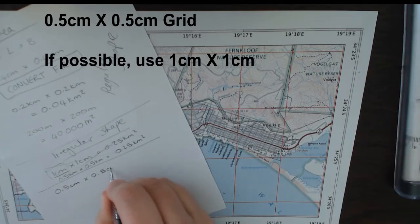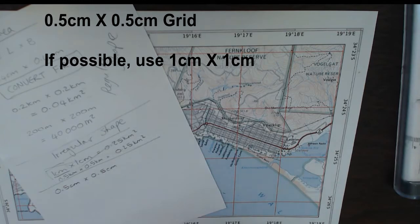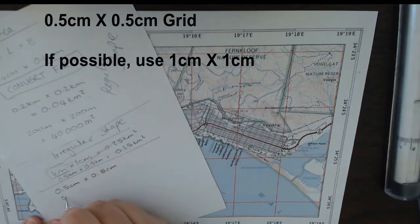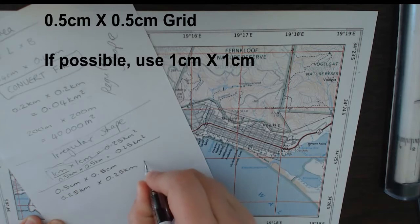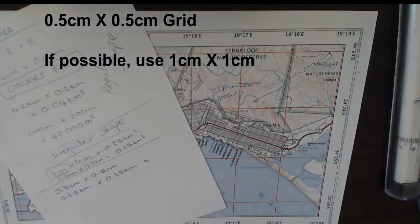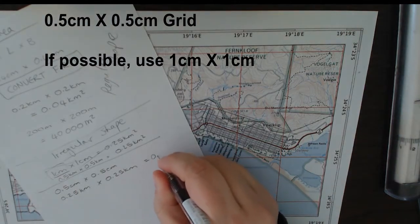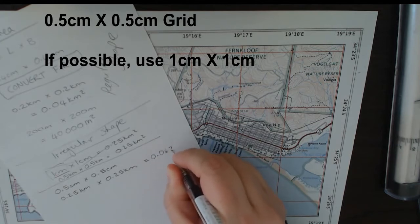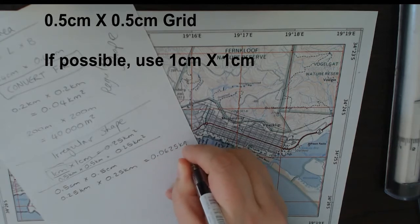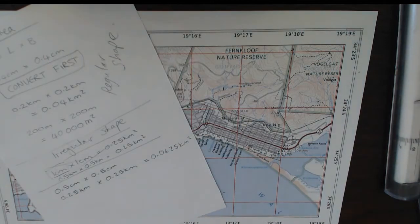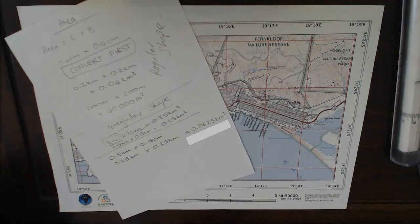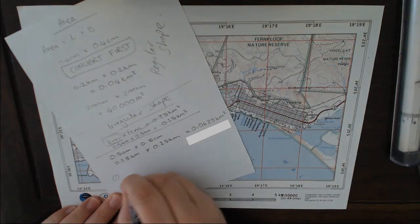We are instead going to have 0.5 centimeters times 0.5 centimeters. Convert first, so 0.25 kilometers by 0.25 kilometers, which is going to give us 0.0625 square kilometers. Now I'm going to leave it with all of those digits while I'm doing the actual calculation. I will round off at the end.